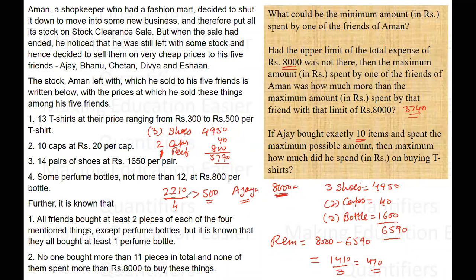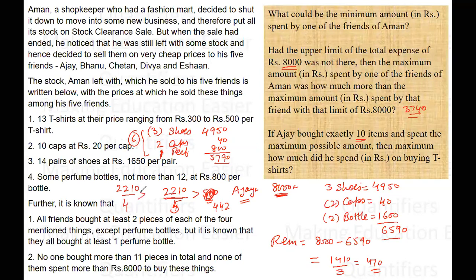That means he cannot buy four T-shirts worth 2210 rupees. He has to buy at least five T-shirts to spend that amount, but he only has four item slots remaining (since total must equal 10). So five T-shirts is not possible here. We need to increase the value of the perfume — buying two perfumes instead of one would change the calculation.